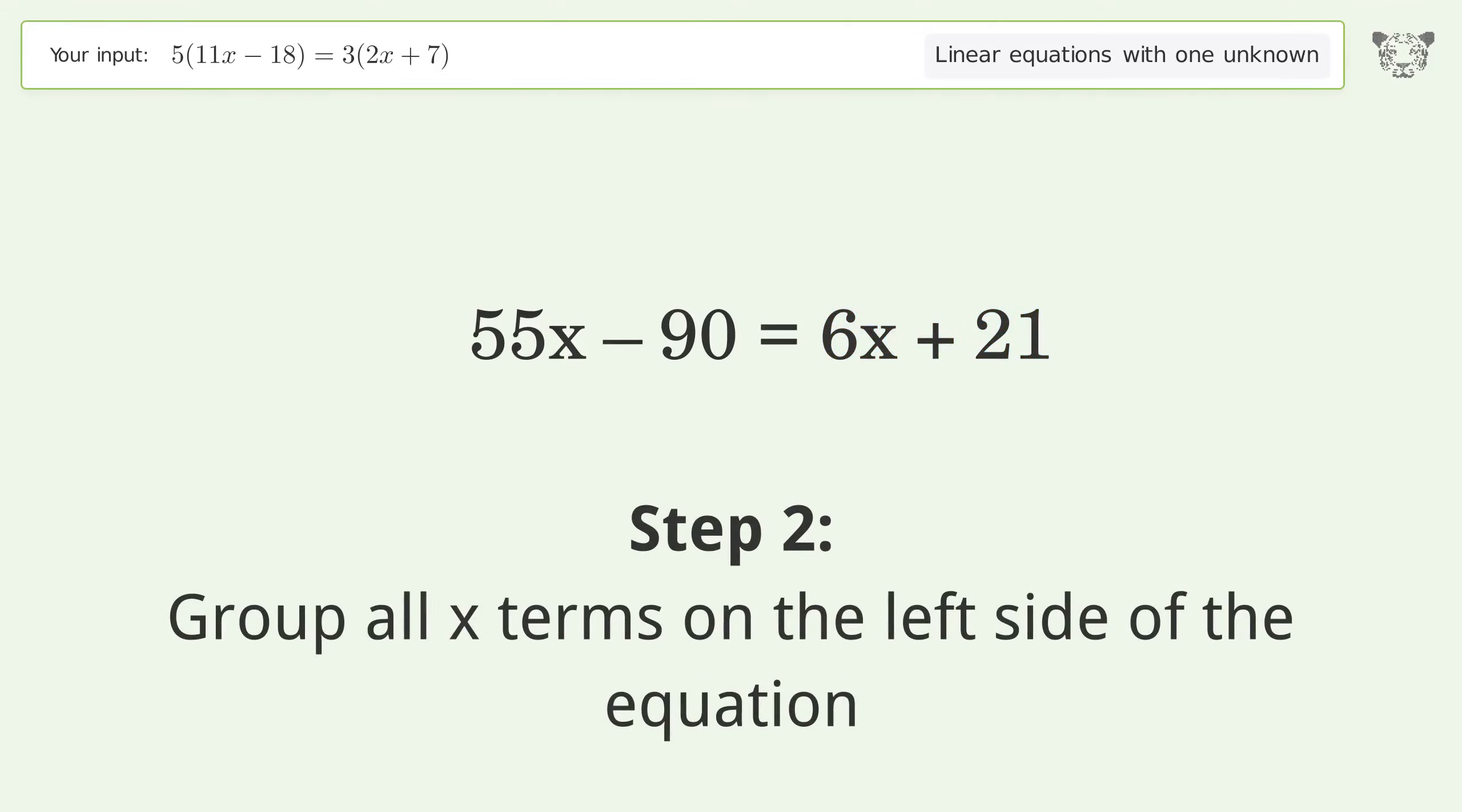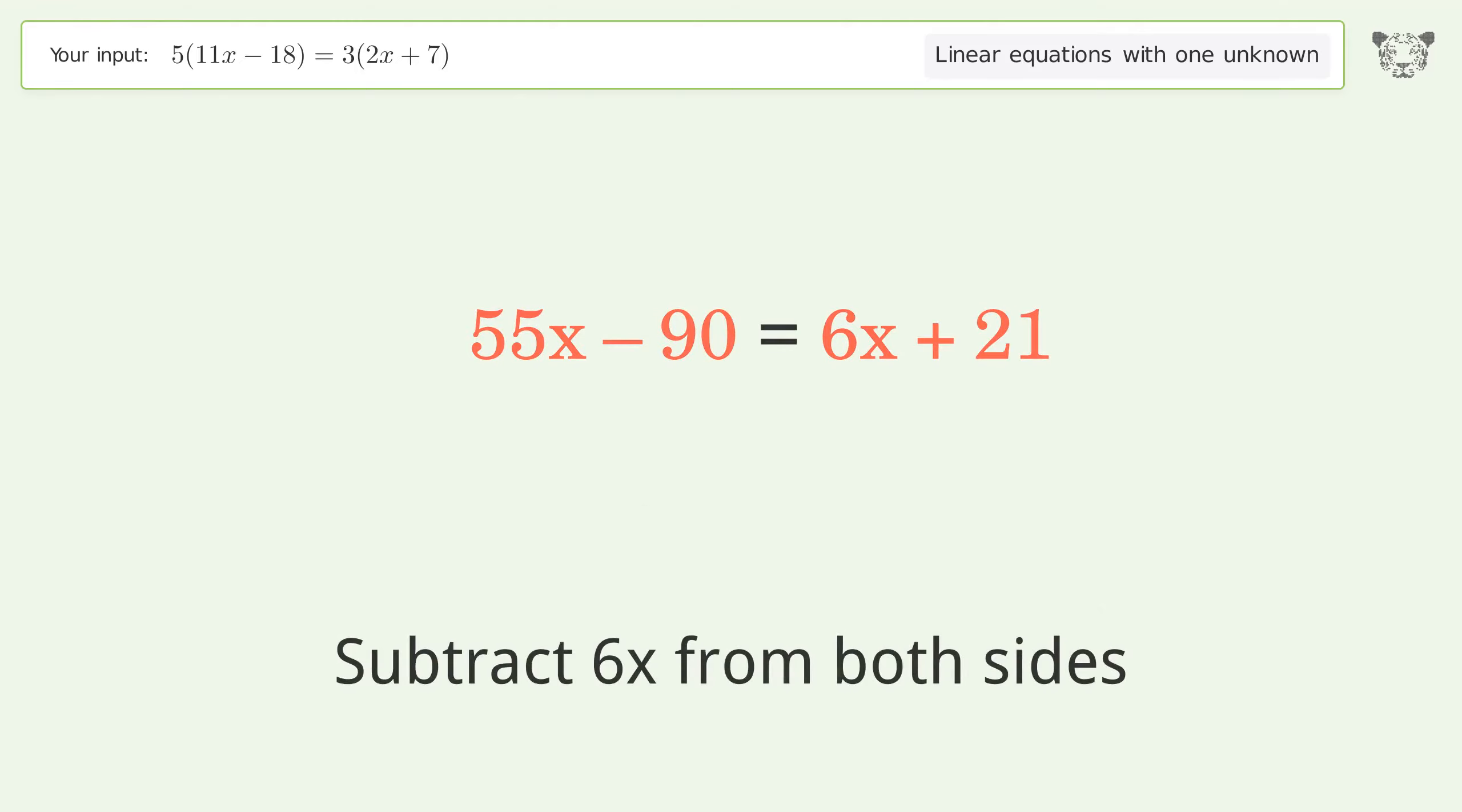Group all x terms on the left side of the equation. Subtract 6x from both sides.